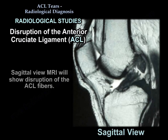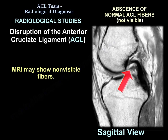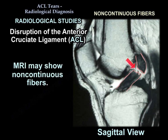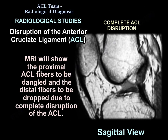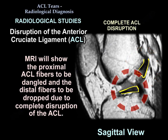The sagittal view of the MRI will show disruption of the ACL fibers — MRI shows non-visible or non-continuous fibers. MRI shows the proximal ACL fibers to be dangled and the distal fibers to be dropped due to complete disruption of the ACL.